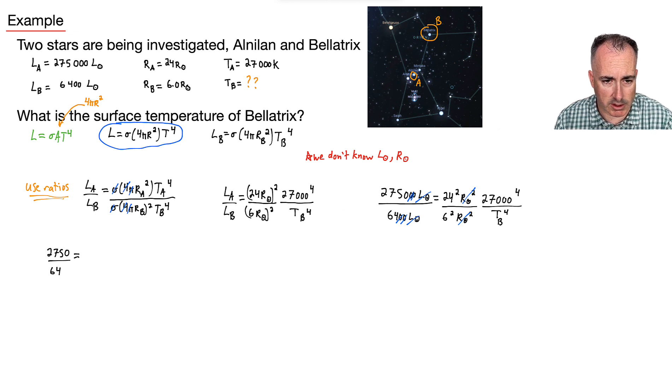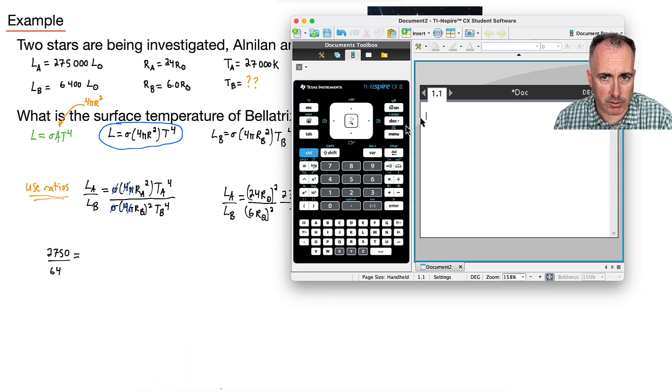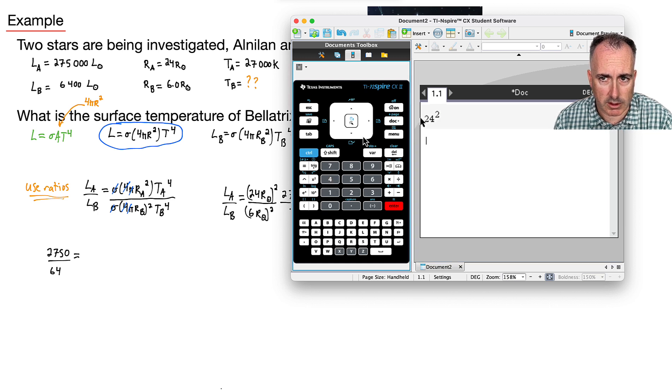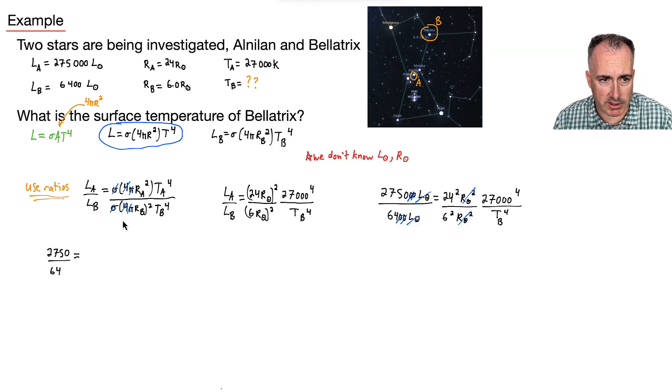Let me just open up my calculator and say, okay, what is 24 squared? That is 576. Okay, so 576 over 6 squared, which is 36.